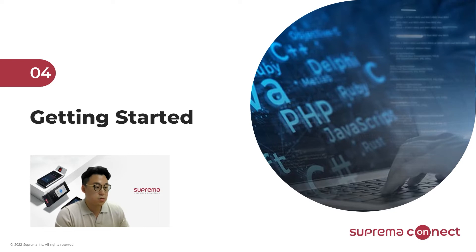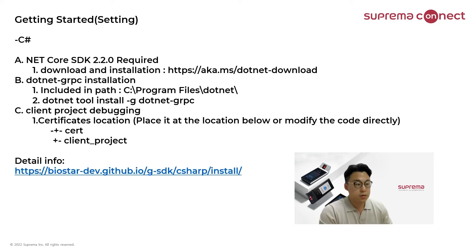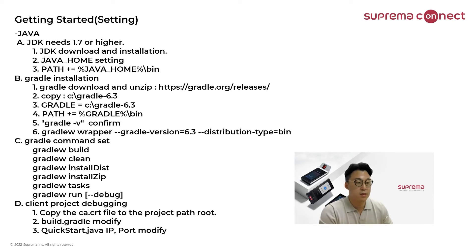Let's get started on how to use GSDK. You can download the sample code and check the URL and the GitHub link provided. You need to install the environment for your project depending on the language: .NET Core, Python, Go, Java, etc. For the C Sharp project in GSDK, you need to download .NET 2 and .NET gRPC. For Java, you need Gradle version 6.3 or higher, so please modify the environment variable in Windows and apply.